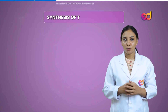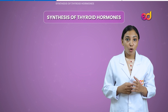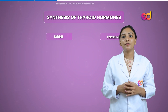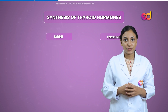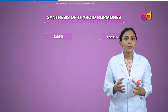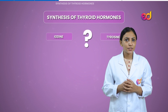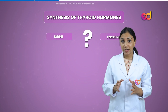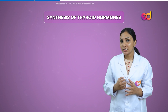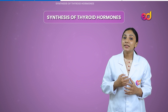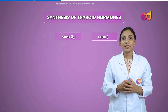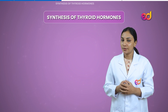Both iodine and tyrosine are essential for the synthesis of thyroid hormones. The question is from where do we get this iodine and tyrosine? Like every other nutrient, these are also consumed through our diet. This consumed iodine is in turn converted into iodide and is then absorbed from the GIT.